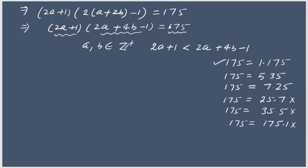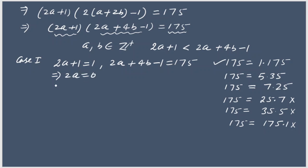Case 1: 175 = 1×175. So 2a + 1 = 1 and 2a + 4b − 1 = 175. From the first equation, 2a = 0, so a = 0. But a and b must be positive integers, so a cannot be 0. We can neglect this case.